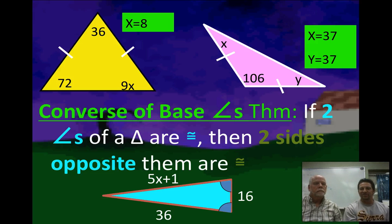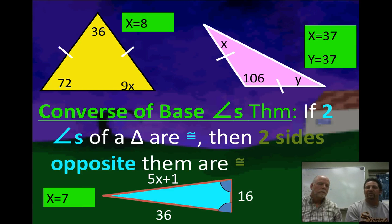There's the Converse of the base angles theorem which basically says if two angles of a triangle are congruent then the two sides opposite them are also congruent. If the two base angles are congruent then you know that the two legs are congruent, opposite those angles. An arrow from the top base angle would go diagonal to the 36, and from the bottom base angle diagonal over the 5x plus 1. 16 becomes the distractor. All I'm going to do is 5x plus 1 equals 36, minus 1 I get 35, divide by 5 and I get 7.